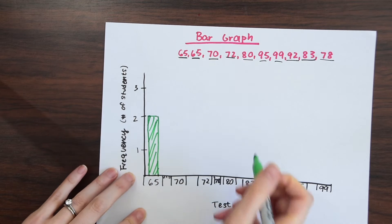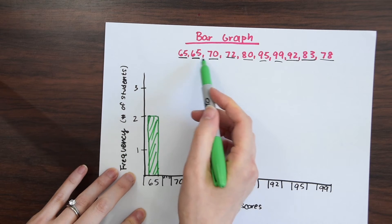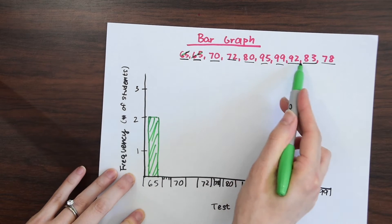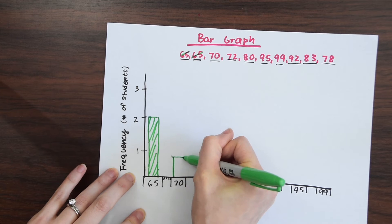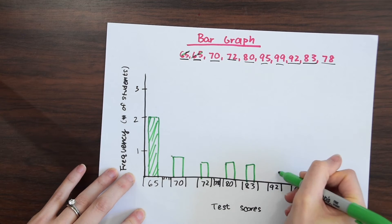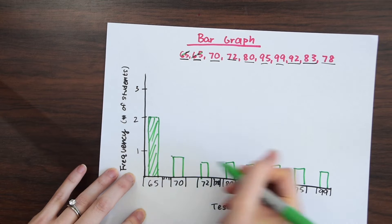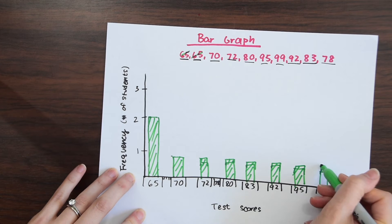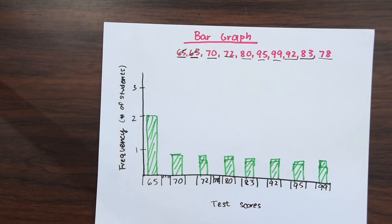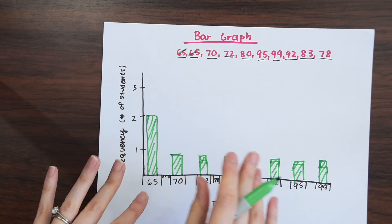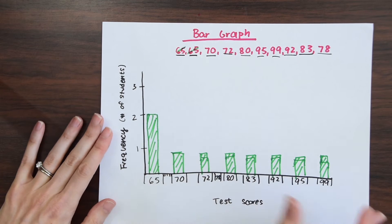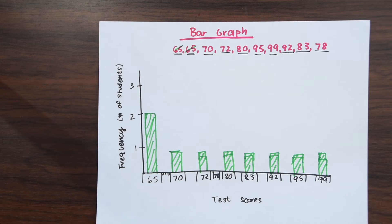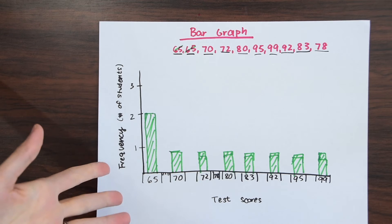Just shade that in so we can see it well. There are no other repeating numbers — if you go through the data, no other numbers repeat — so we know that the rest all go up to one. As you can see, the scores are kind of all over the place and it's a little difficult to come to any conclusions by looking at this bar graph. And that's where a histogram might be more helpful.